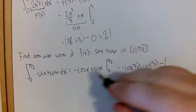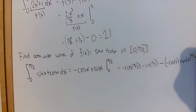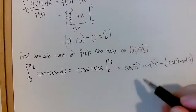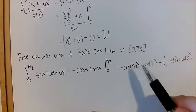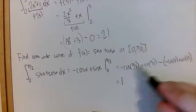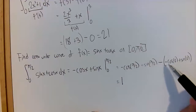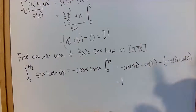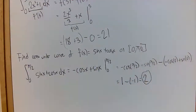Then we subtract: negative cosine of zero plus sine of zero. Cosine of pi/2 is zero, so the first term goes away. Sine of pi/2 is one. For the second part, cosine of zero is one but we have a negative, so that's negative one, and sine of zero is zero. So we have one minus negative one, which gives us two.